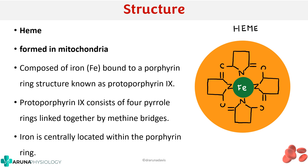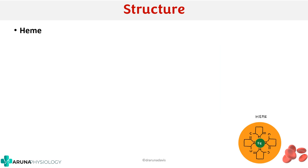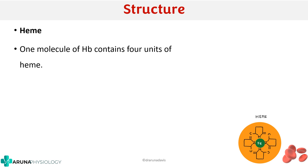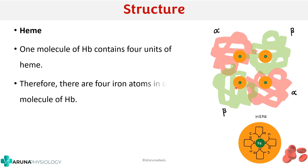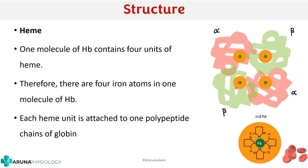One molecule of hemoglobin contains 4 units of heme, which means we have 4 iron atoms for oxygen to bind. Each heme unit will be attached to a polypeptide chain of the globin, so there are 4 heme units and 4 polypeptide chains in a hemoglobin molecule.